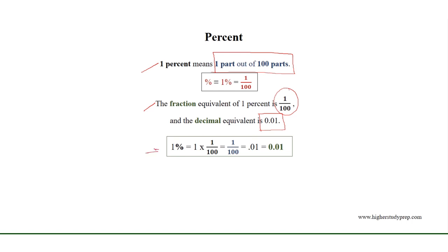1% is equal to 1 times 1 over 100, because percent is equivalent to 1 over 100. Therefore, the fraction equivalent of 1% is 1 over 100, and 1 over 100 is equal to 0.01, which is the decimal equivalent of 1%.